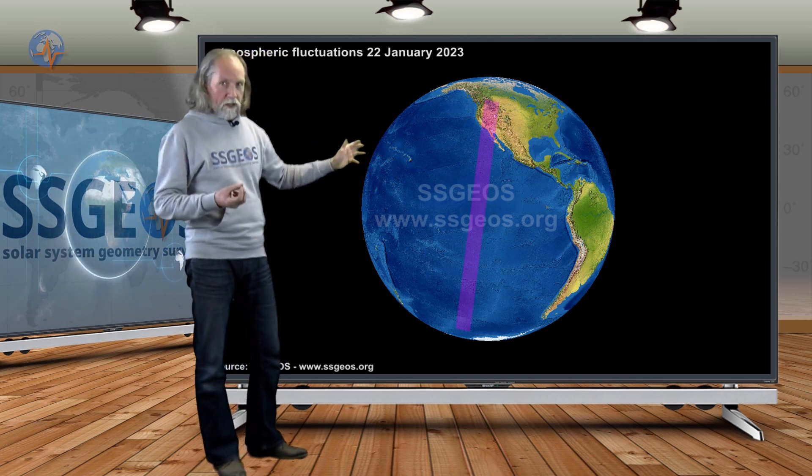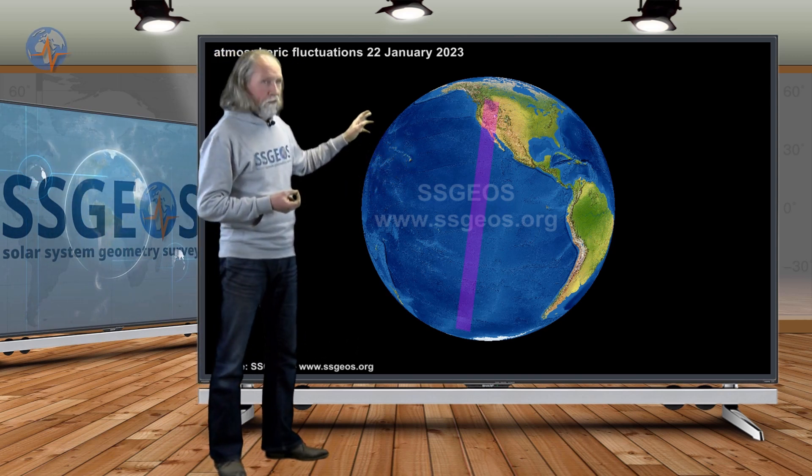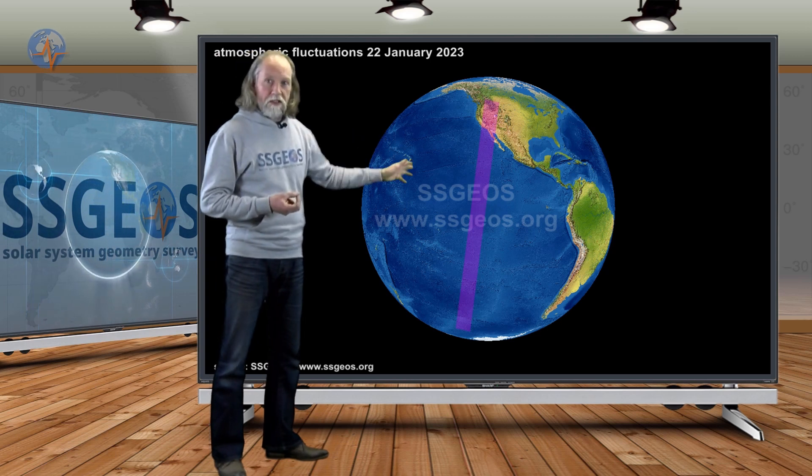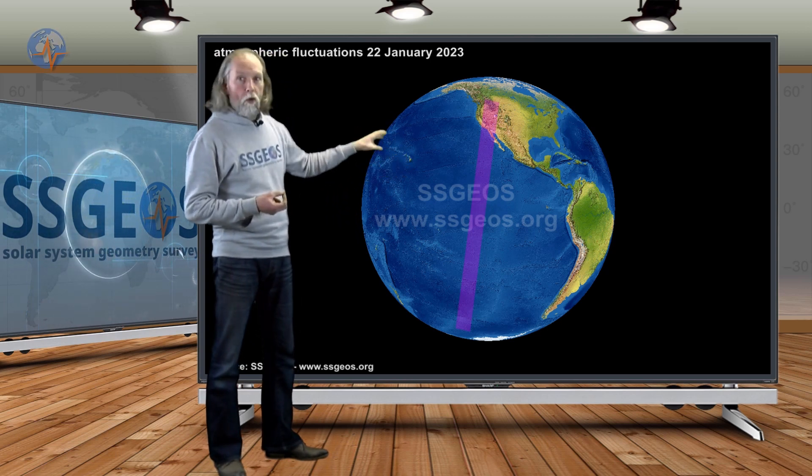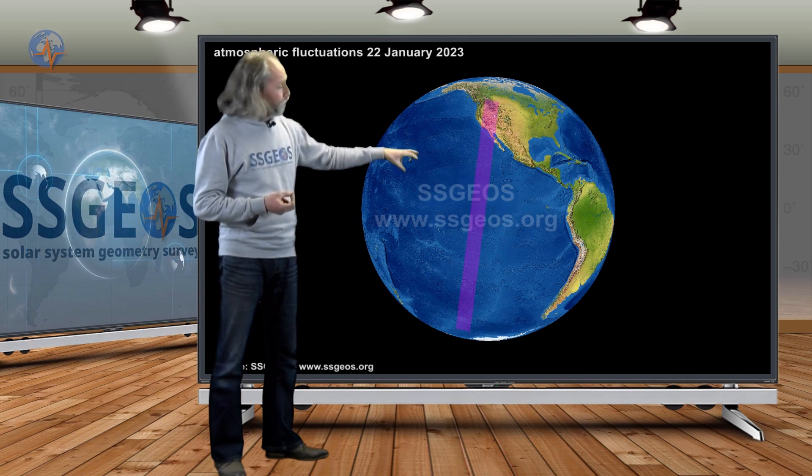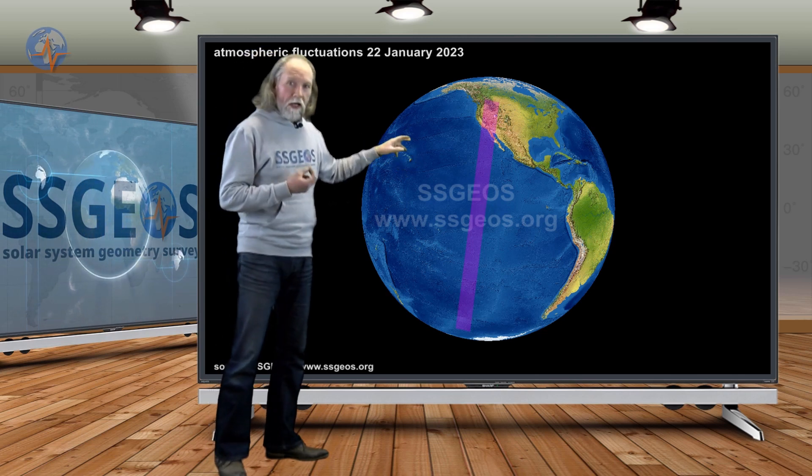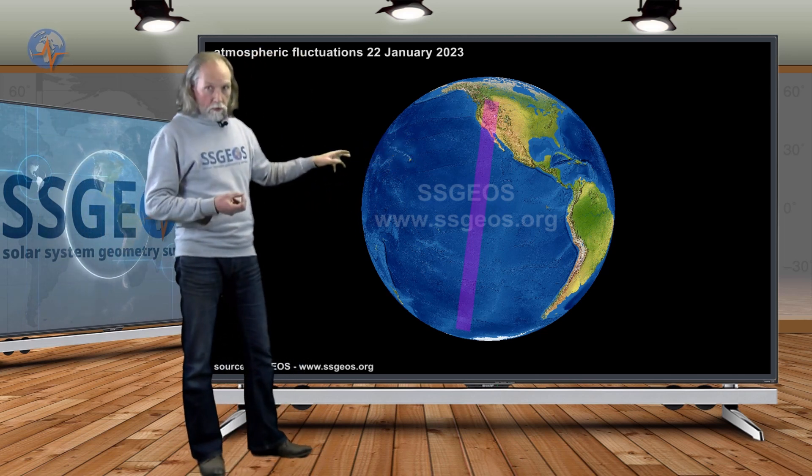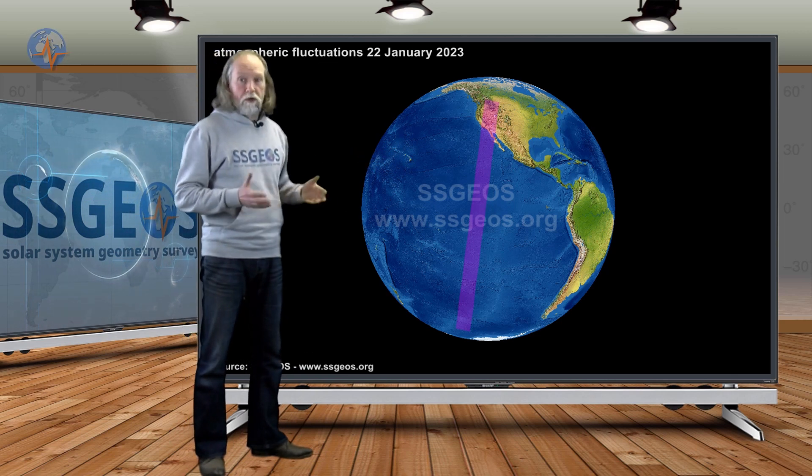So the first fluctuations that we picked up were from the 13th, and then the 15th and the 16th. So far we only had a 4.2 in the California channel, but these fluctuations could indicate additional stronger seismic activity, maybe moderate seismic activity.